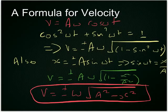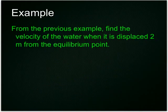Putting it in for this example here, from the previous example, find the velocity of the water when it's displaced 2 metres from the equilibrium point. So, you're just going to substitute into that equation. And I think you get plus or minus 3.5 metres per second.